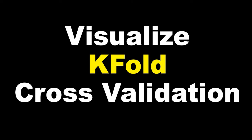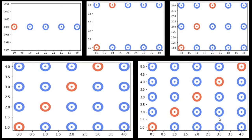Hi everyone, welcome to the session where we will learn about how to visualize K-fold cross validation. The line of action will be: first I will take only five points and show you how to visualize K-fold cross validation using five points, initially without even using a for loop. I'll create my own dataset, then use a for loop, then use the functions and implement K-fold cross validation. So let's start.